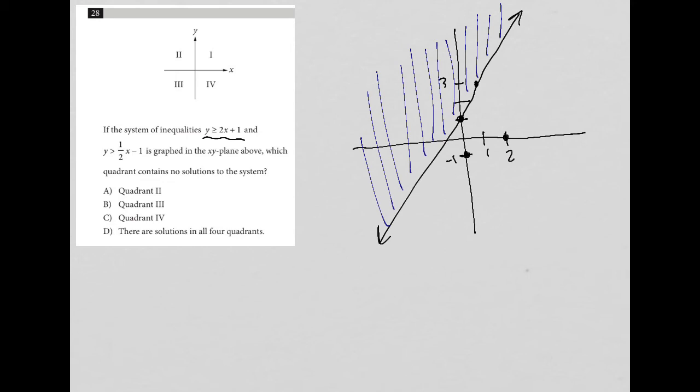And then because it just says greater than, I'm going to put a dashed line through those two points. And then it also is greater than, so I'm going to also shade above that dashed line.